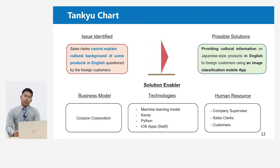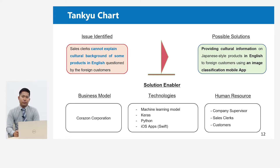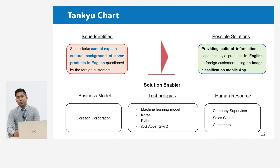So for the summary: the issue is that sales staff are unable to explain cultural information in English to foreign customers. The possible solution is providing cultural information on Japanese-style products in English using an image classification mobile app.